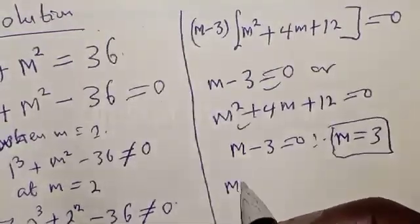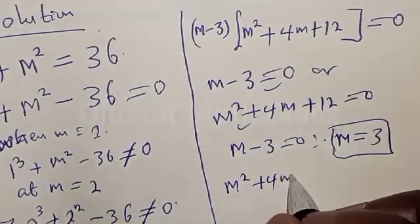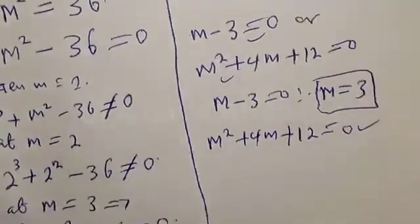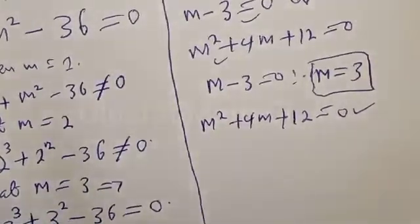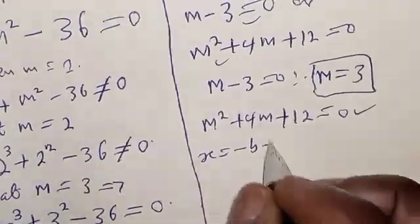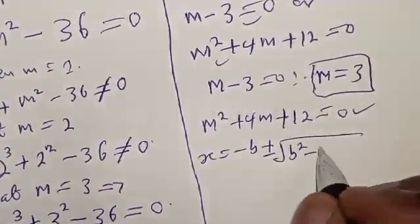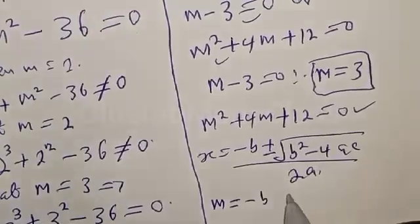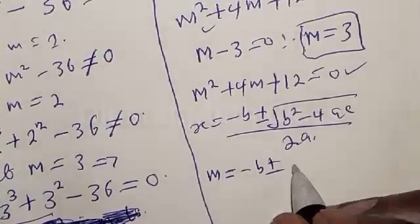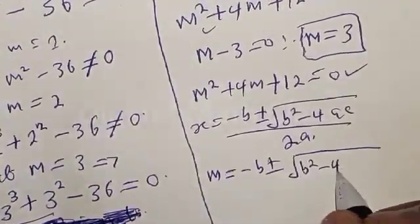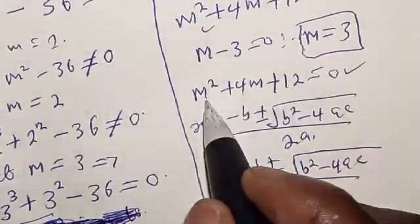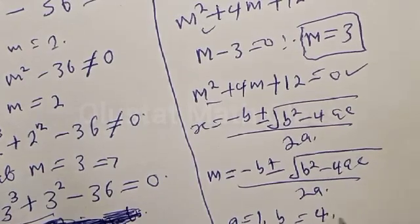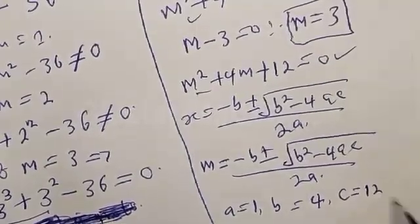From the second case, m squared plus 4m plus 12 equals 0. This is a quadratic equation and we solve using the quadratic formula: m equals negative b plus or minus square root of b squared minus 4ac, all over 2a. From the equation, a equals 1, b equals 4, and c equals 12.